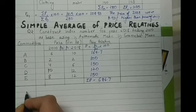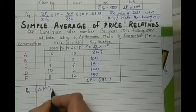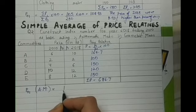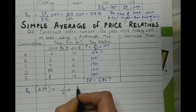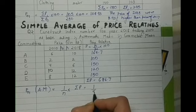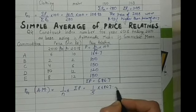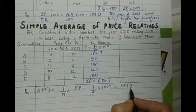Now the price index number on the basis of the arithmetic mean, as I explained the various concepts in my previous video, you will take 1 by n into sigma P. That is 1 by 5, these are 5 commodities, 1 by 5 into 686.7 equal to 137.34.